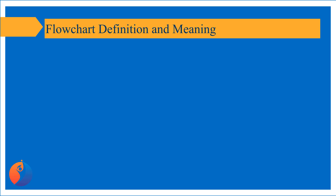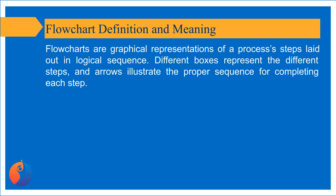Flowchart Definition and Meaning: Flowcharts are graphical representations of a process's steps laid out in logical sequence. Different boxes represent the different steps, and arrows illustrate the proper sequence for completing each step.